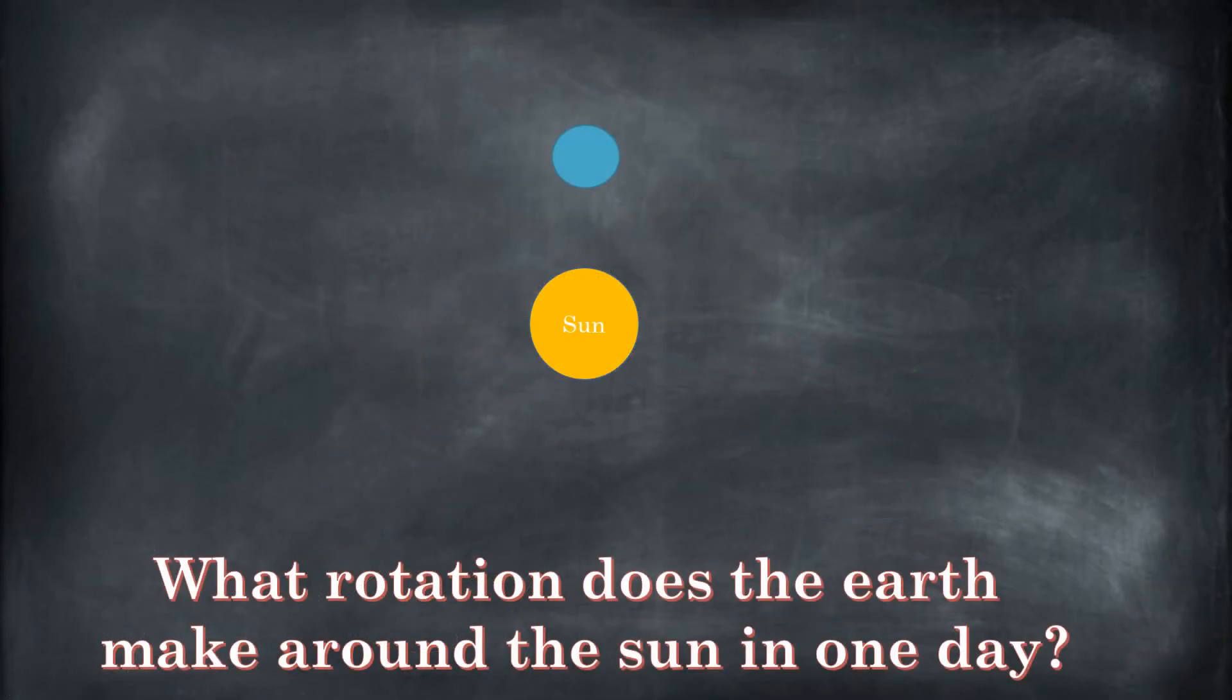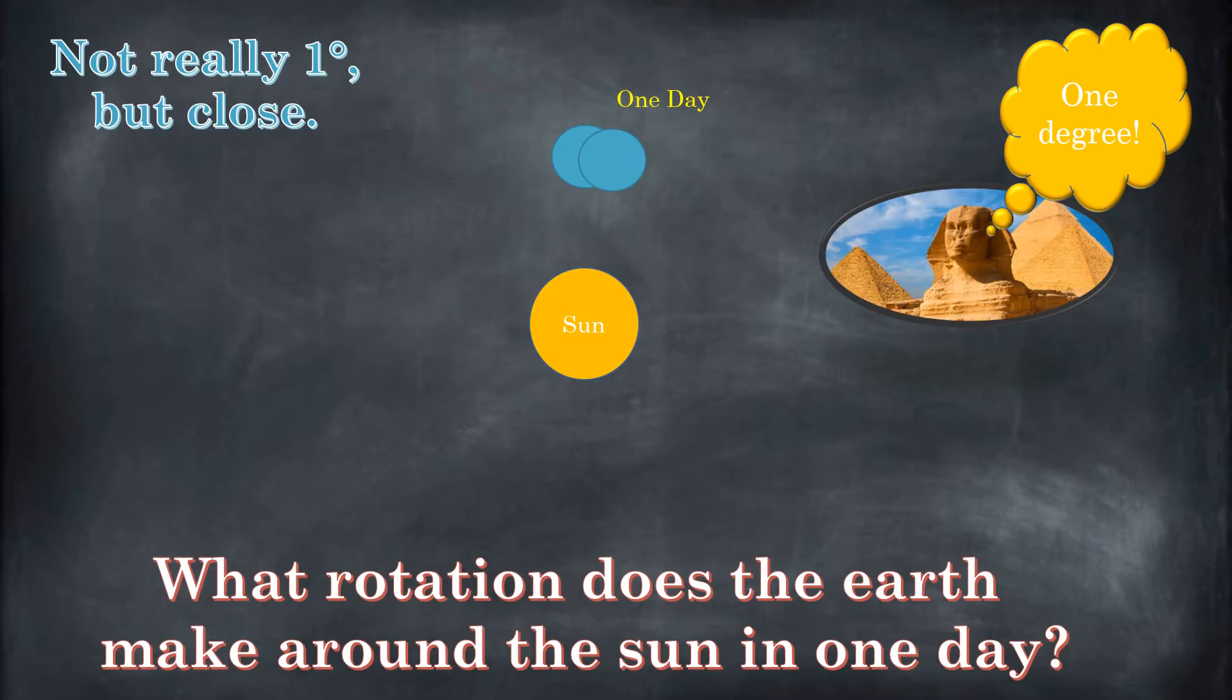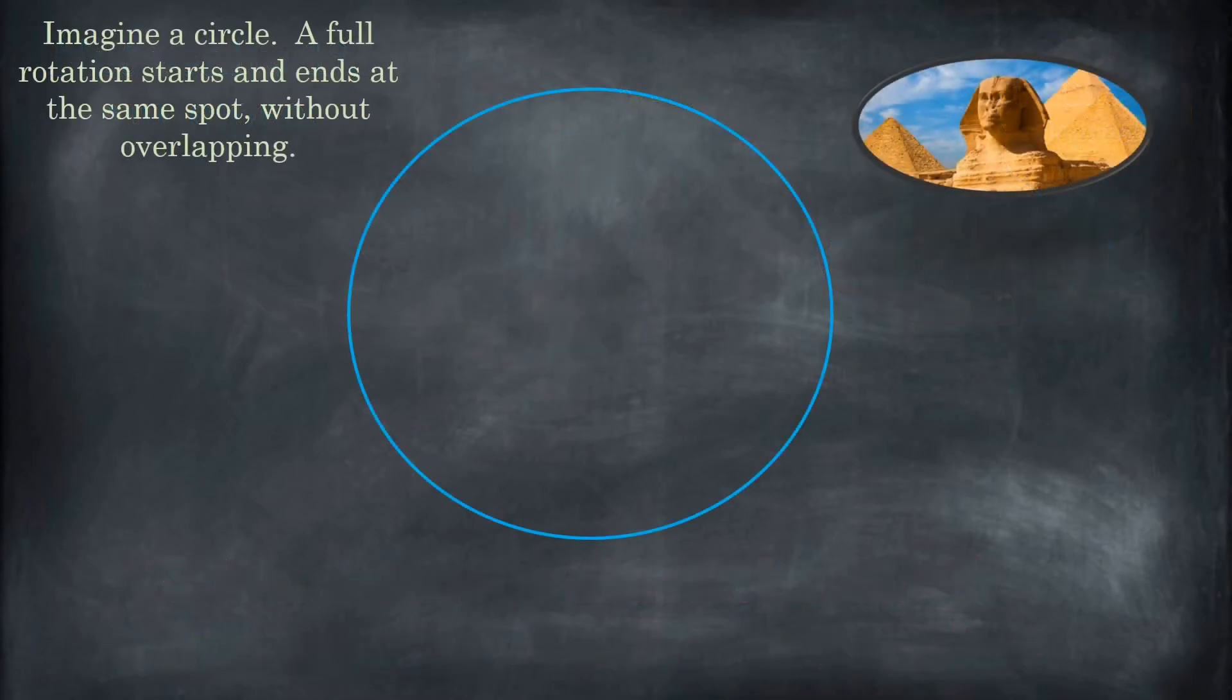So let's get to it. If you talk about the earth rotating around the sun, it takes a full year to make a complete rotation. But how far does the earth rotate around the sun in just one day? The Egyptians thought that it was one degree. They thought so because they believed there were 360 days in a year. Pretty close, but of course it's wrong. But that's where we get our definition of 360 degrees being in a full rotation or in a circle.